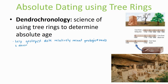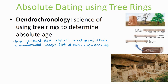Tree rings can also help geologists study environmental changes. For example, if there was a year with lots of rain, then the rings are wide. An example shown in this picture is Mesa Verde National Park, where archaeologists were able to use dendrochronology to determine the age of the beams in the pueblos.